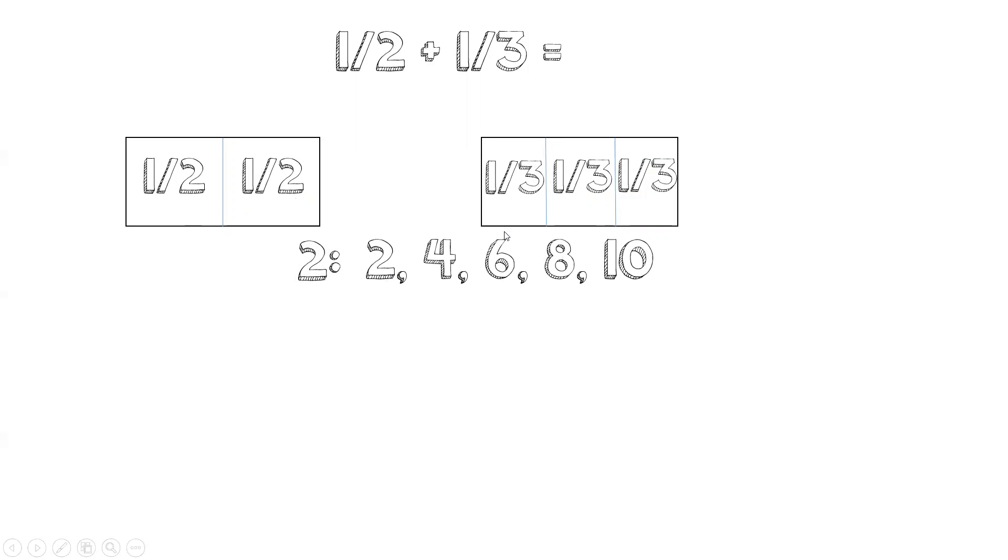For this side, the thirds, we have three, six, nine, twelve, fifteen. So the lowest number that they both have in common in this case is the sixth.